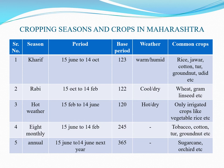Here is a table showing the cropping seasons and common crops in Maharashtra. The Kharif season period is from 15 June to 14 October, with a base period of 123 days. The weather during Kharif season is warm or humid, and common crops include rice, jowar, cotton, toor, and groundnut. The Rabbi season period is from 15 October to 14 February, with a base period of 122 days.